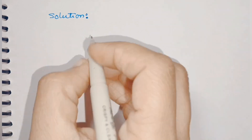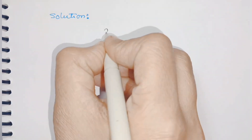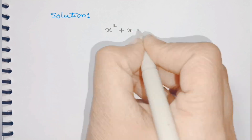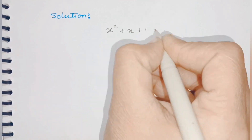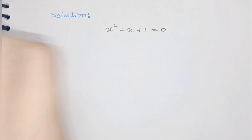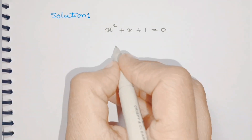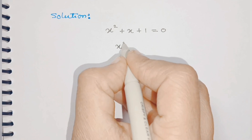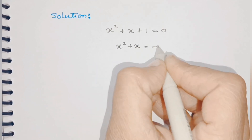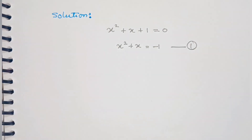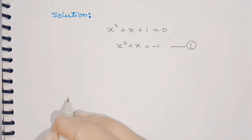Come to the solution. First we'll write the given equation as it is: x squared plus x plus 1 is equal to 0. By rearranging, we can write x squared plus x is equal to minus 1 — we give this as equation number 1.